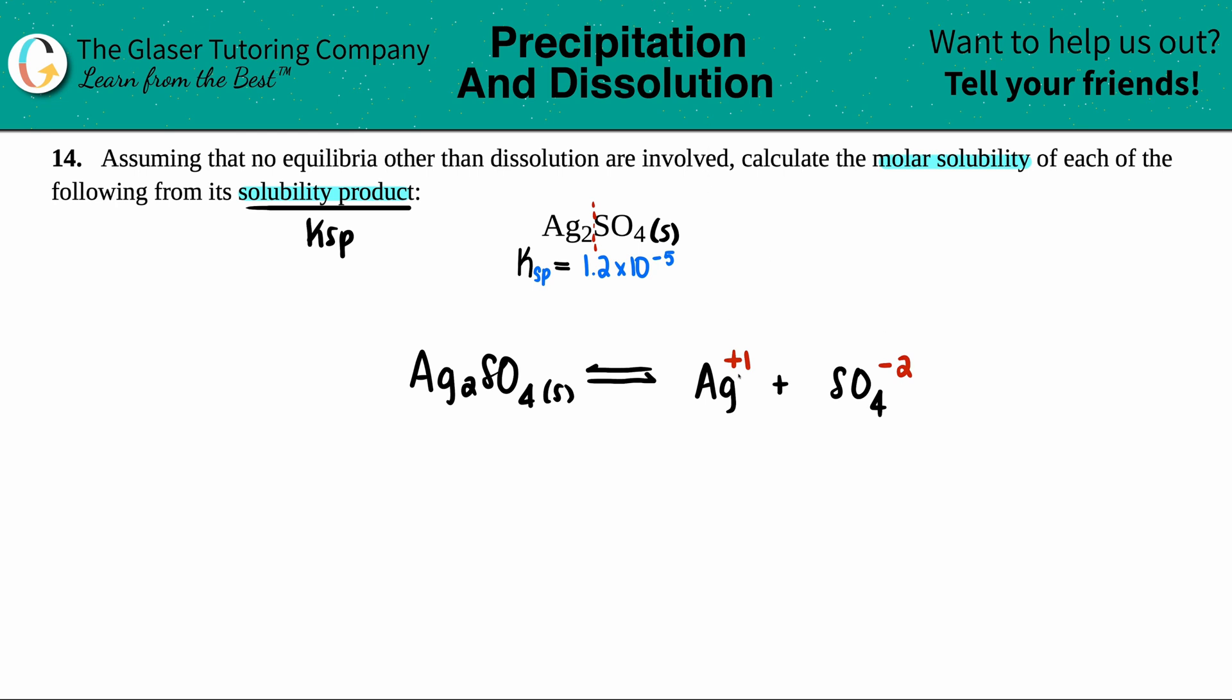And since I wrote down the charges, they're aqueous, AQ, AQ. And now we just have to make sure that it's balanced. Well, there's two Ags. So I have to put a two in front of here, but one SO4, one SO4. So we're balanced. So I'm going to put this to the side.